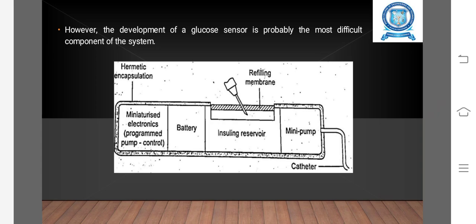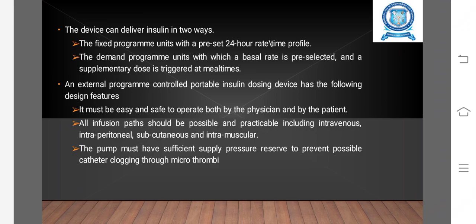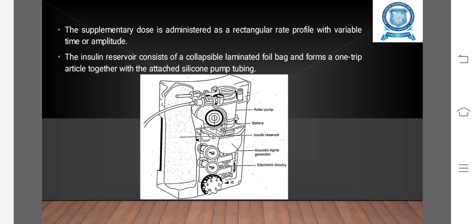However, the development of a glucose sensor is probably the most difficult component of the system. The device can deliver insulin in two ways: first, fixed program units with a preset 24-hour rate per time profile.